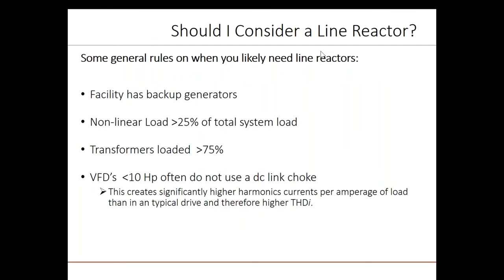Here are some other reasons to consider a line reactor. Backup generators have to be sized to supply not only the motor load, but the additional harmonic currents. By reducing current harmonics, line reactors may reduce the load enough to allow sizing of a smaller and less expensive generator. If the nonlinear load exceeds 25% of the system load, line reactors should be considered. Next, if transformers are heavily loaded above 75% for extended periods, harmonics can cause dangerous heating. Line reactors should be used to reduce this heating. Lastly, since small VFDs do not usually have a DC-link choke, it is worth considering using a line reactor on these small VFDs.